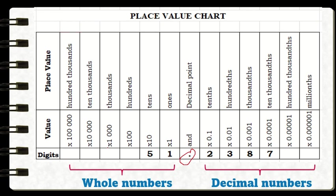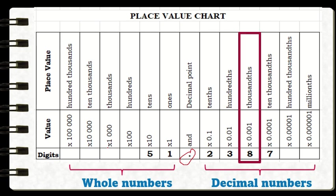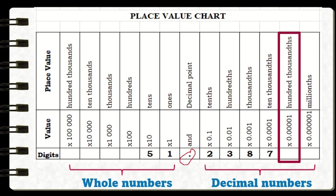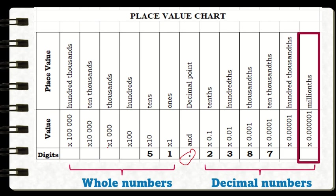Now let's go to our decimal numbers. Unlike whole numbers, decimal numbers start with tenths — it does not begin with ones place. Then it is followed by hundredths, thousandths, ten-thousandths, hundred-thousandths, and the sixth place to the right of the decimal point is the millionths place. As you can see, whole numbers end with 's' for their place value, while the place values of decimal numbers end with 'ths'.